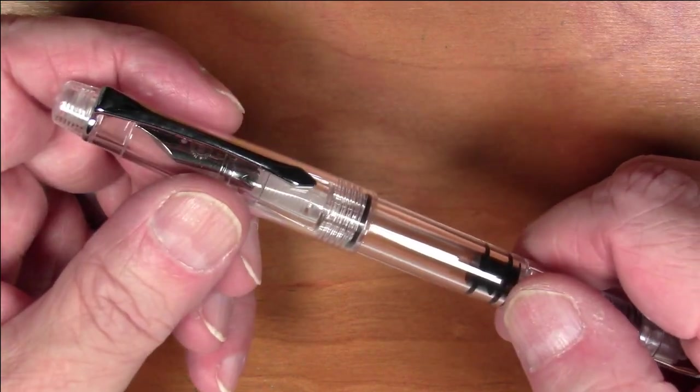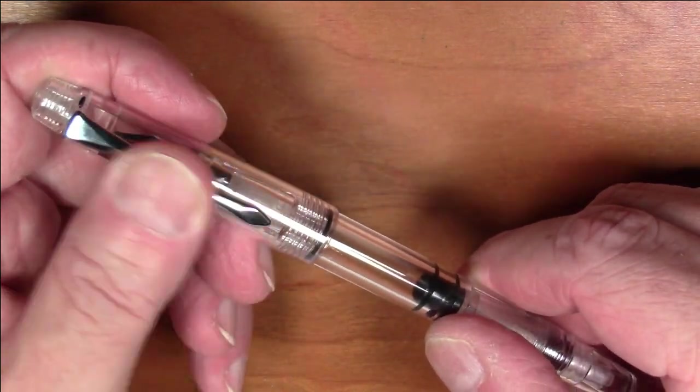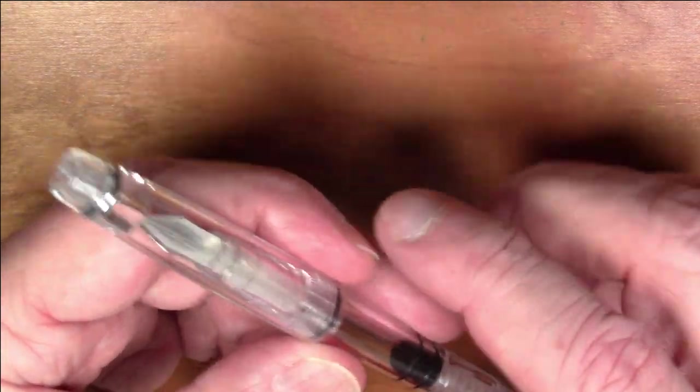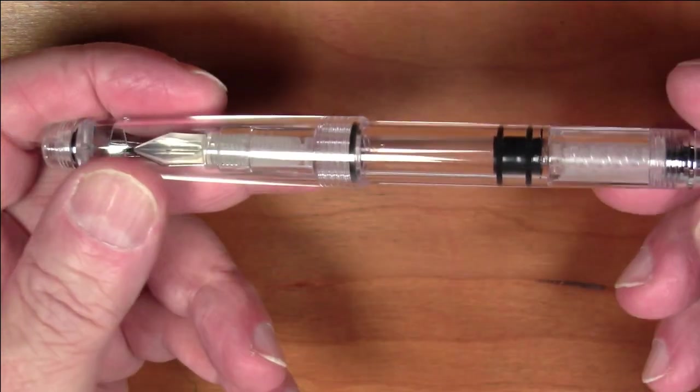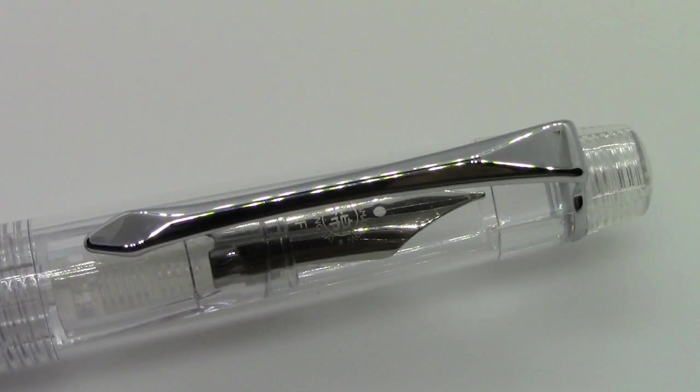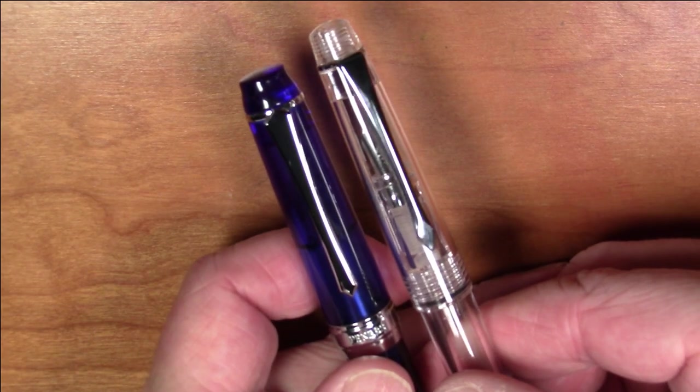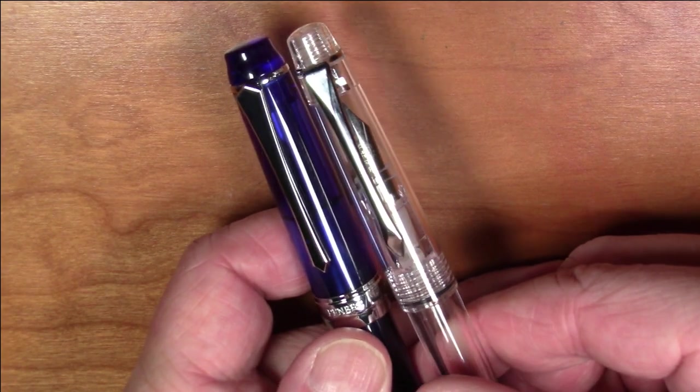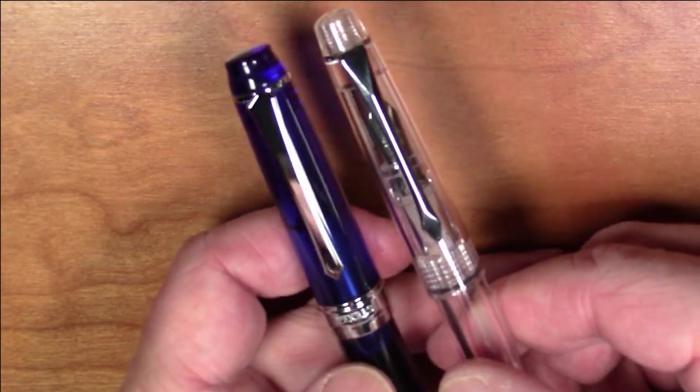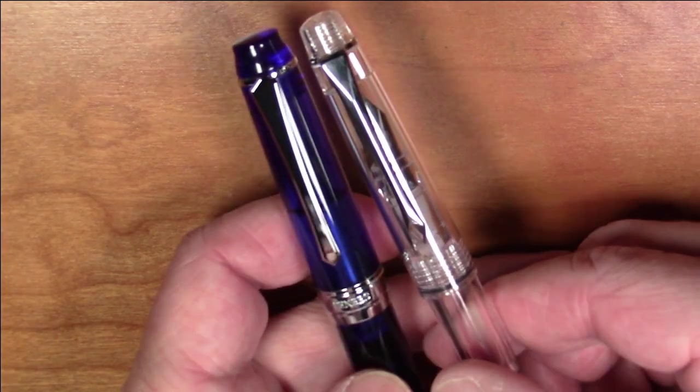It is an extraordinarily light pen, it only weighs 8 grams. It does not have any branding or cap ring or anything like that. The clip is somewhat of a sort of a low rent version of the sword style clip that's used on some of the higher end PenBBS pens like this model 456.